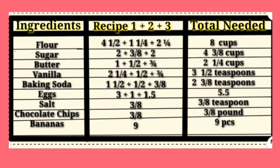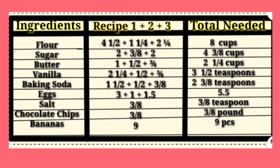So the first ingredient is flour. We add all the flour from the 3 recipes: from banana bread, we have 4 and 1/2 cups of flour; from chocolate chip cookies, 1 and 1/4 cups; and from sugar cookies, 2 and 1/4 cups. Now let's add the fractions — first, let's change the mixed fractions into improper fractions.